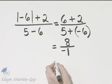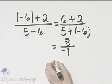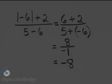Then we can simplify further. 8 divided by negative 1 is negative 8.